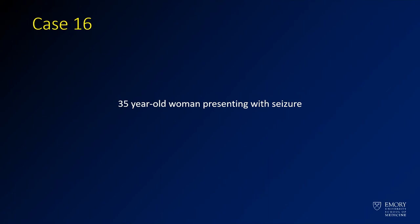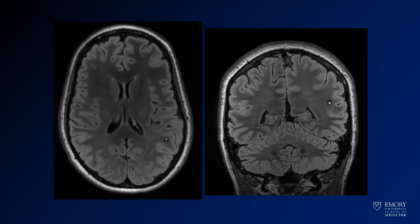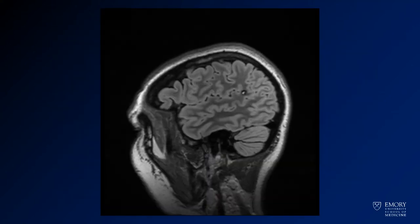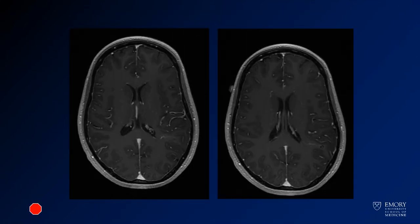Case 16 is a 35-year-old woman presenting with a seizure. Here we have some FLAIR images from an MRI, including a sagittal FLAIR, and finally some post-contrast images through the same level.